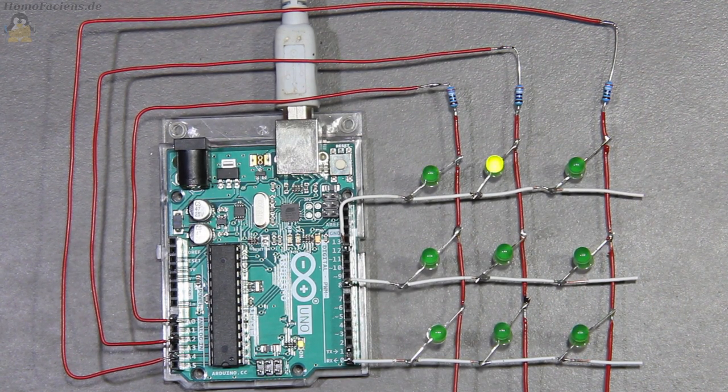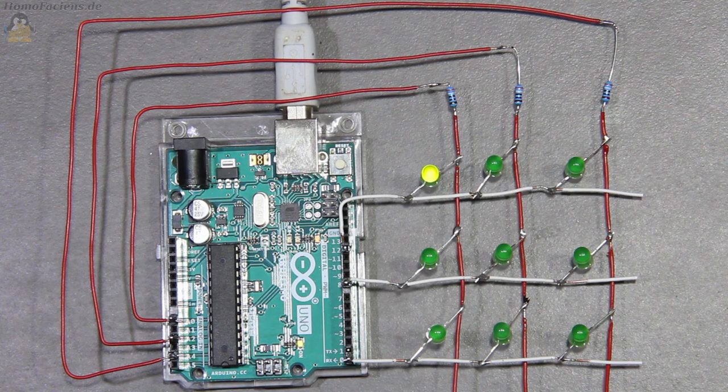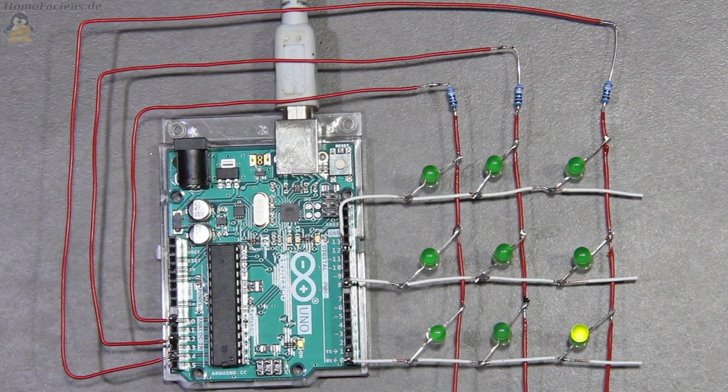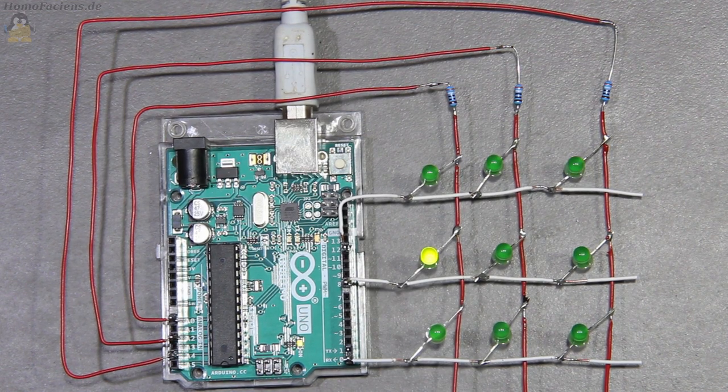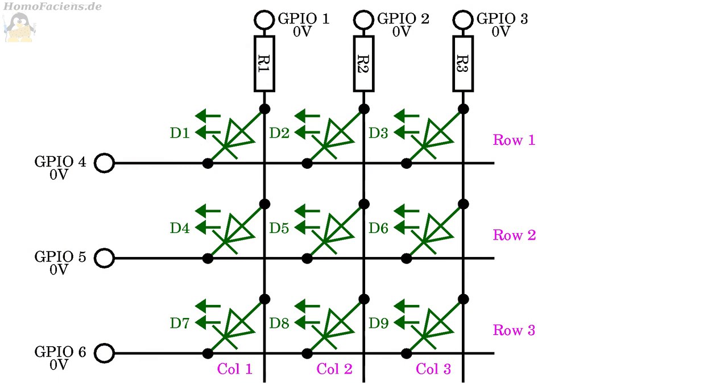Here you can see a hand-soldered matrix composed of 9 LEDs which are arranged in 3 rows and 3 columns and are controlled by only 6 GPIOs on an Arduino Uno. Using the circuit diagram I will explain how that matrix works.